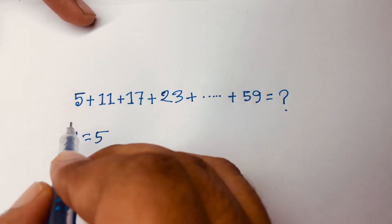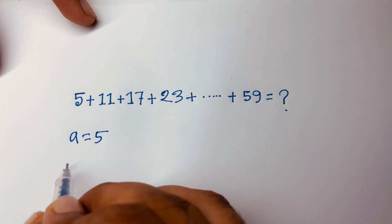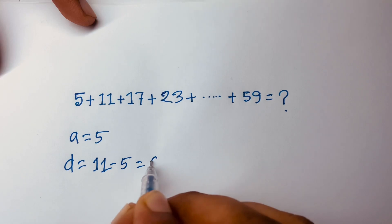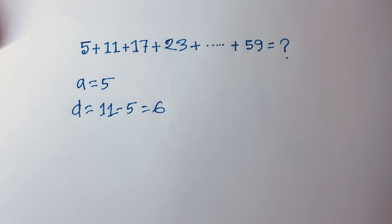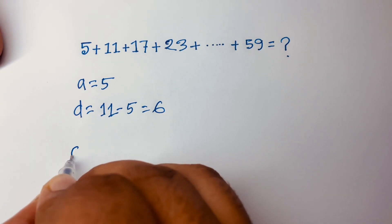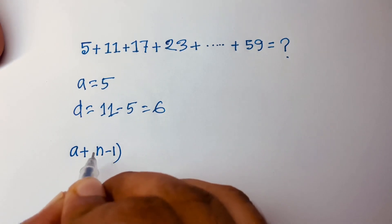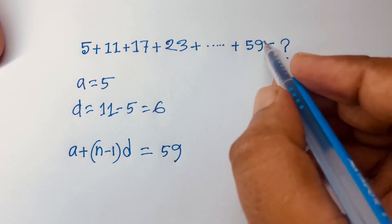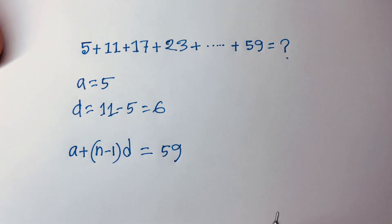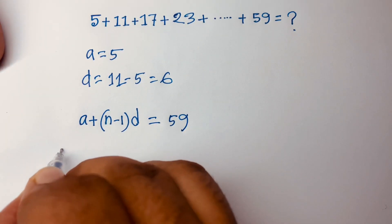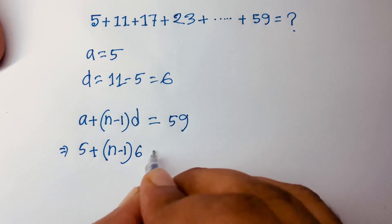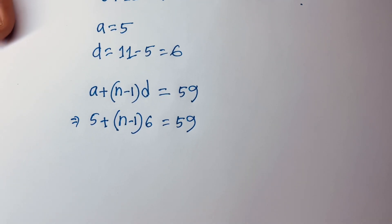First, a is equal to 5 because that is our first number, and d is equal to 11 minus 5, which is 6. According to the nth term formula, a plus (n minus 1) times d equals 59, our last number. So 5 plus (n minus 1) times 6 equals 59.